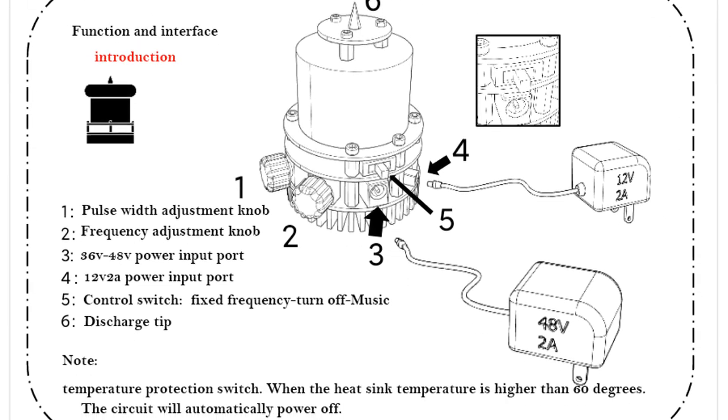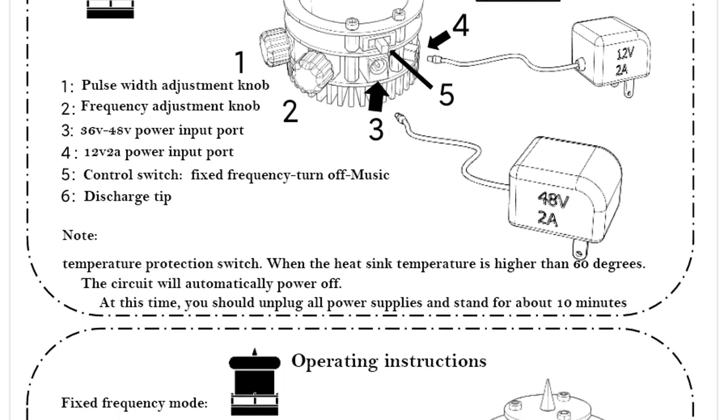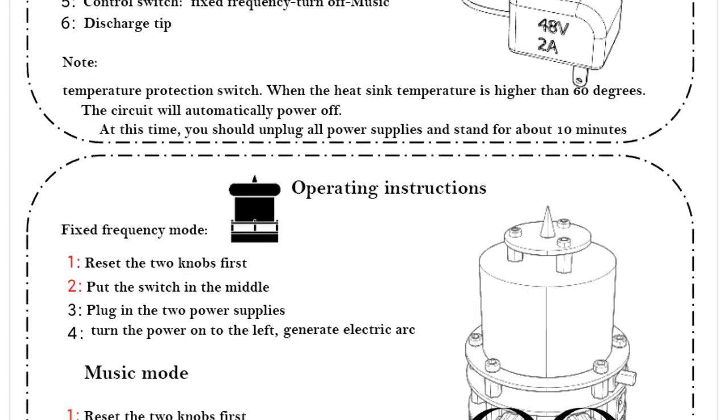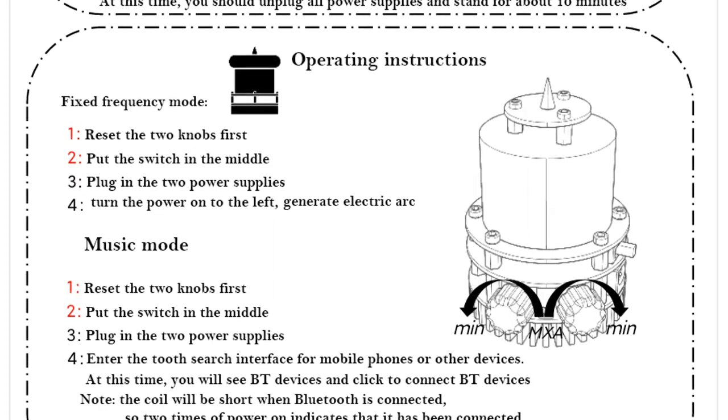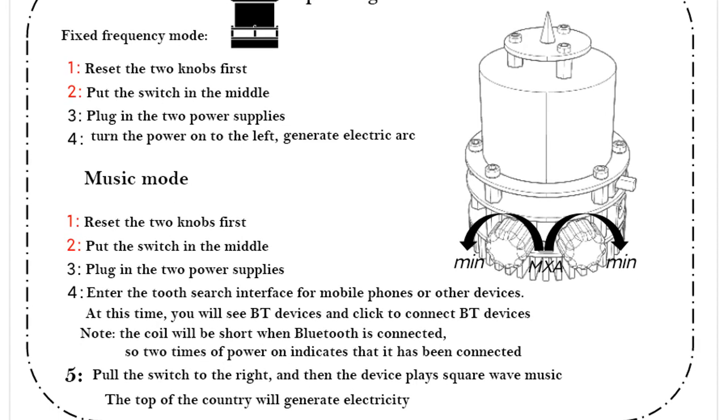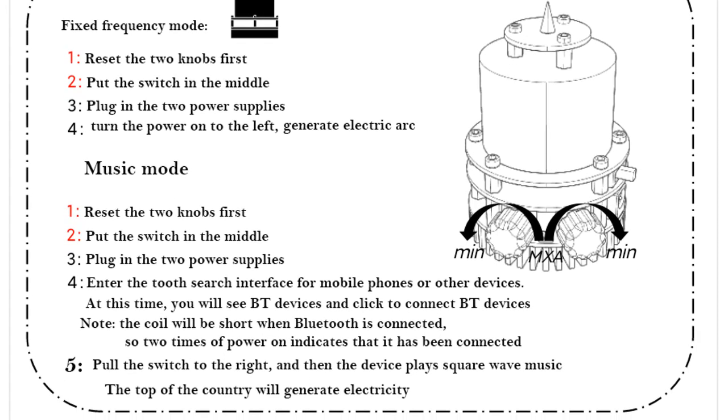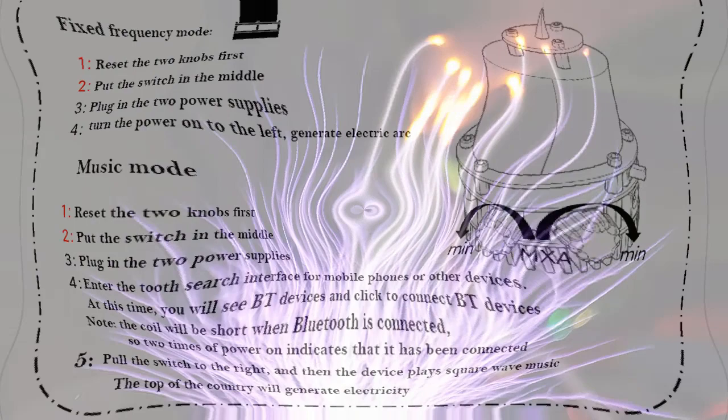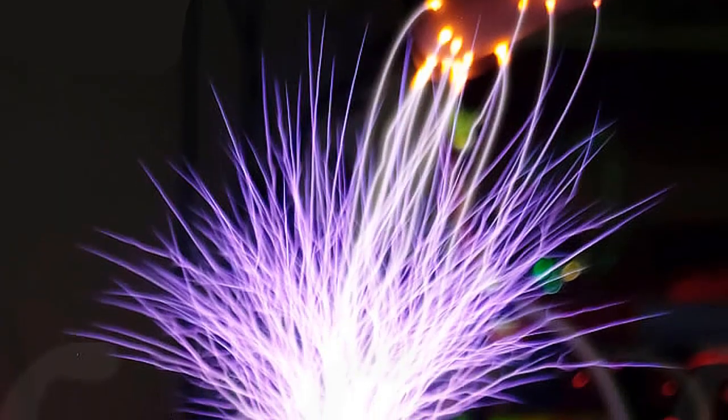The new solid-state Tesla coil (SSTC) is much smaller than traditional Tesla coils, yet it produces beautiful music and artificial lightning. The SSTC Music Double Class E is the perfect teaching tool for physics students and enthusiasts of all ages.